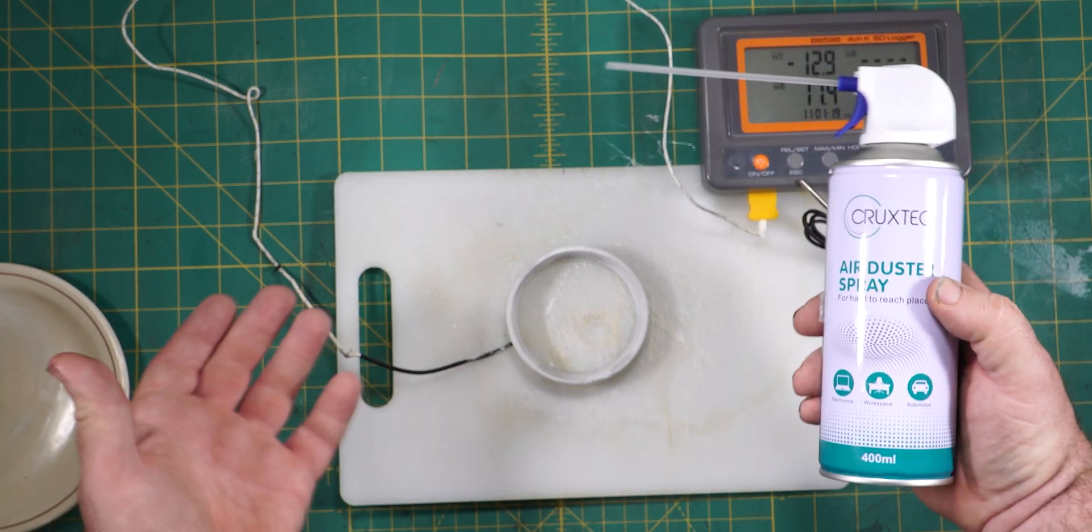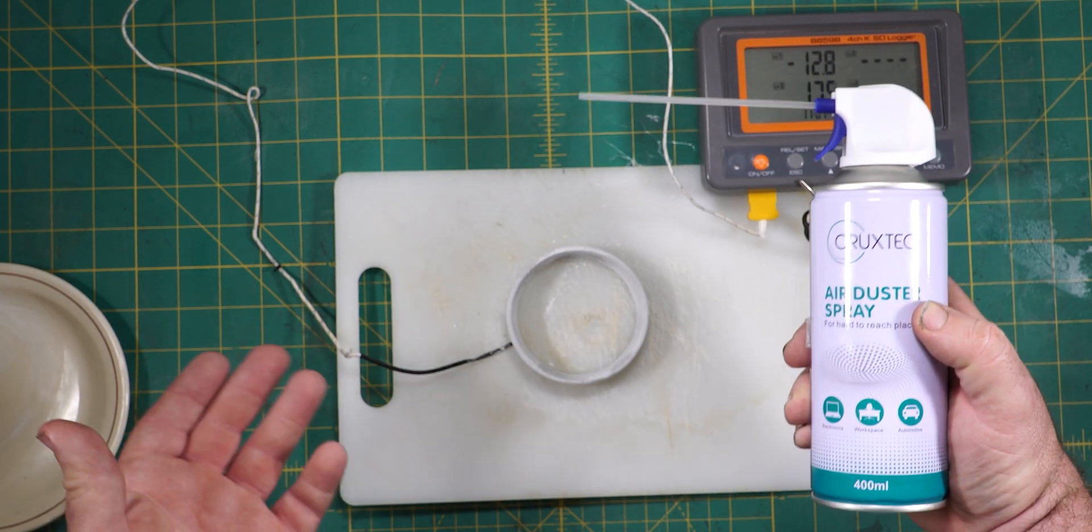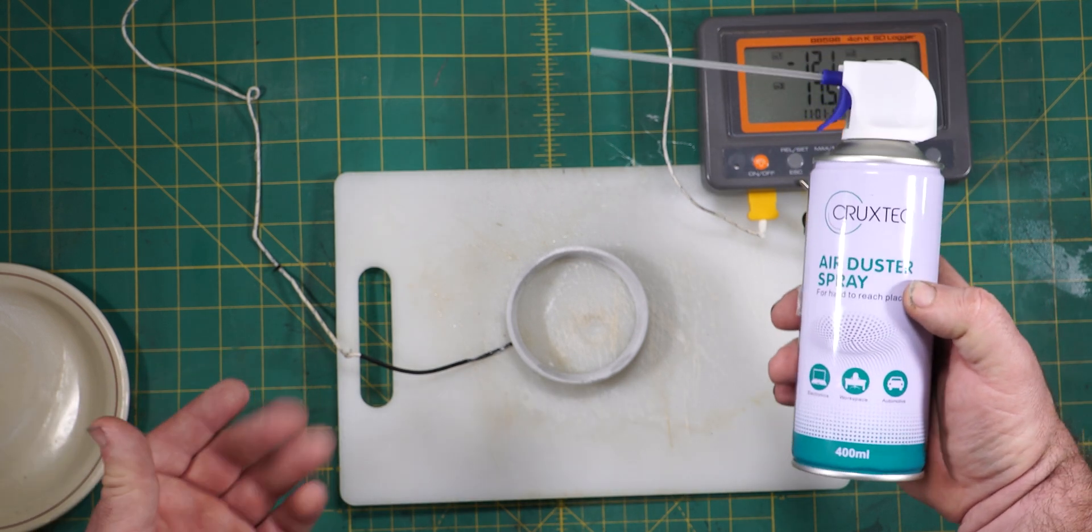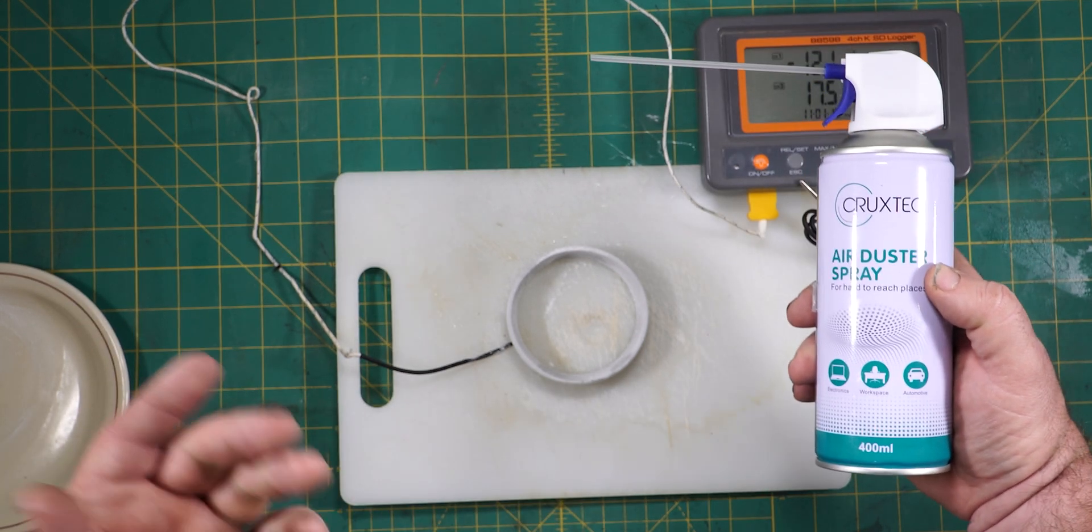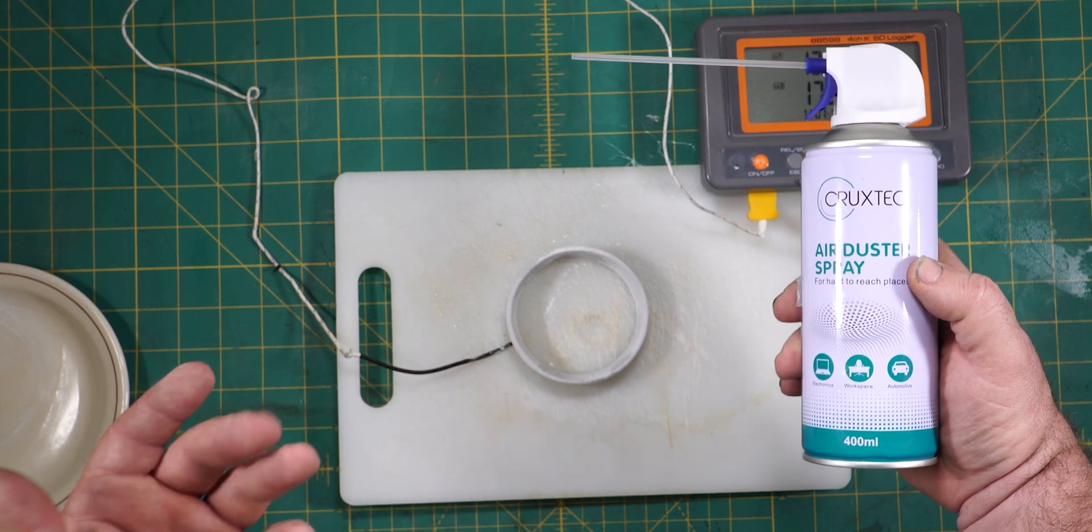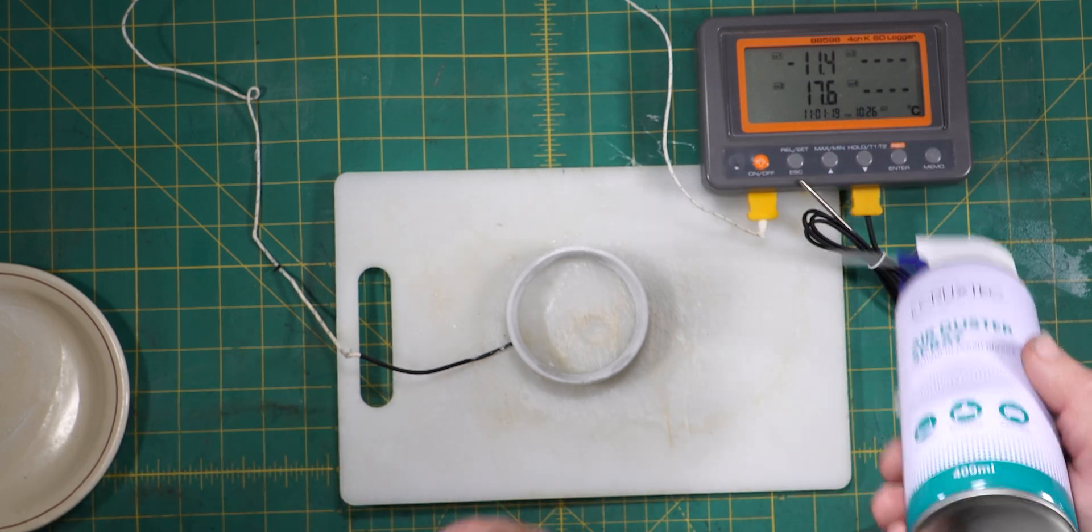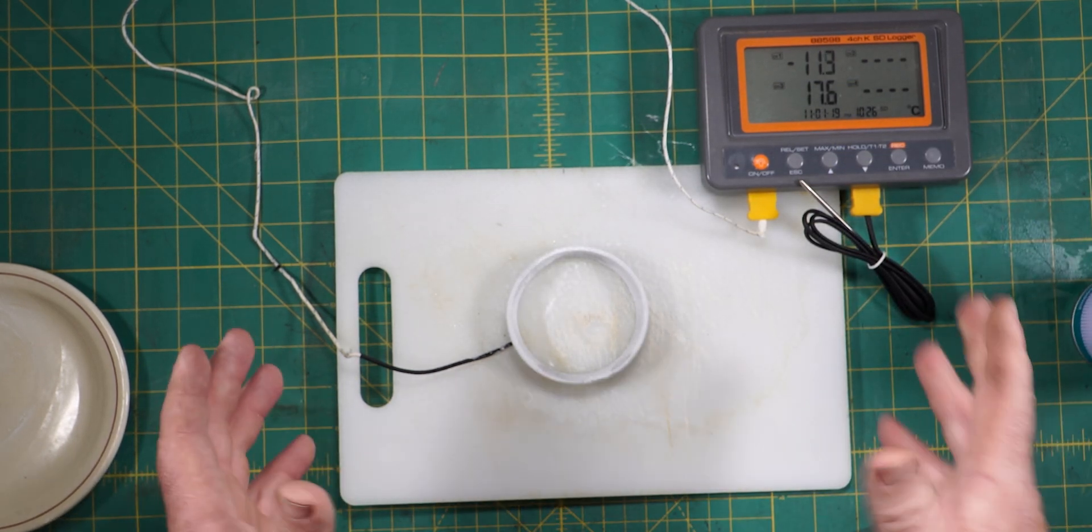Now you can get dedicated freeze sprays, but they seem to run about $40 or $50, anywhere up to $80 for a can. This one from my local computer shop was $4.50 a can. So it's a bit of a no brainer there. Buy the cheap stuff and turn it upside down if you need to do this.